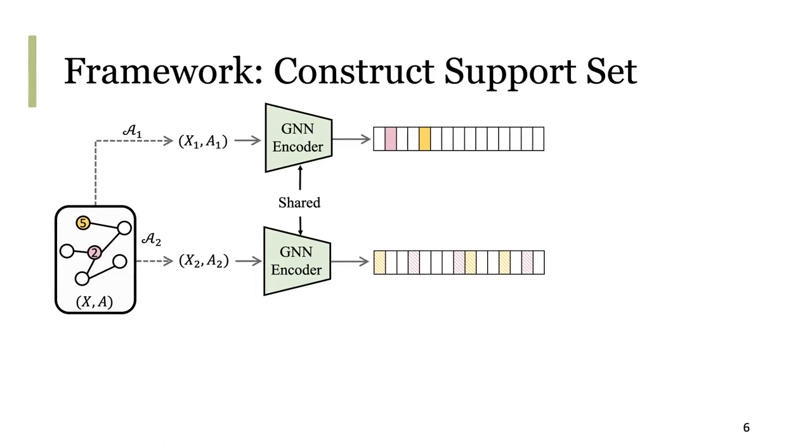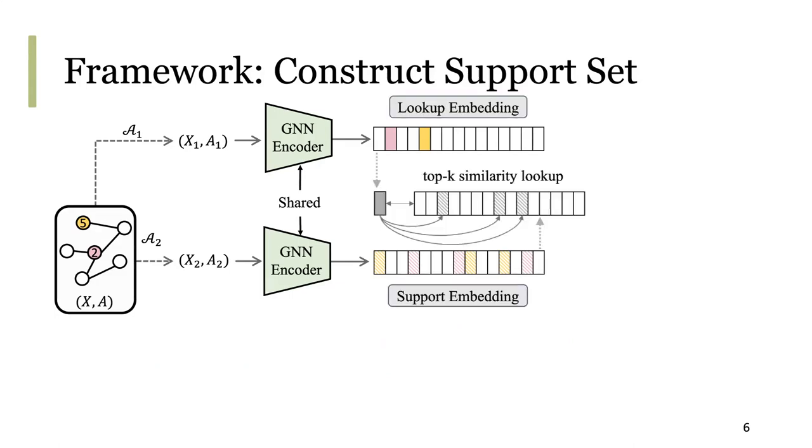Then we use data augmentation along with a GNN encoder to generate two embedding groups: the lookup embedding and the support embedding. Then, for each node, we take its lookup embedding to search through the support embeddings. We are looking for the closest matches, which will form our support set.